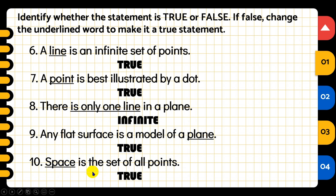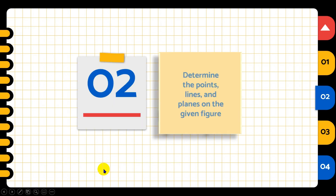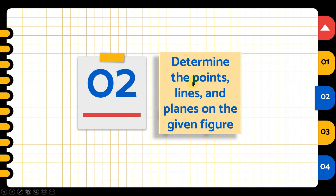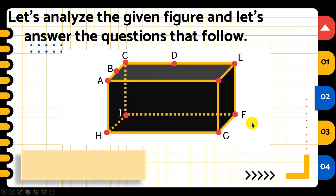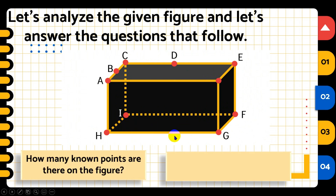Now we have additional information about undefined terms in geometry. Let's proceed to our second goal for this video: determine the points, lines, and planes on the given figure. Let's analyze the given figure — a box with distinct points and lines. The first question is: how many known points are there on the figure? Remember that points are represented by a dot and named with capital letters.